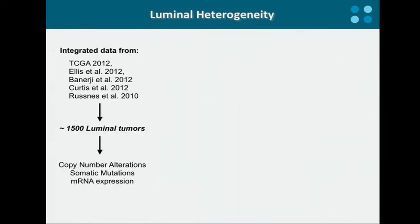So what we did was integrate multiple datasets from different studies, accounting for roughly 1,500 luminal tumors, 1,000 of which are luminal A. From this dataset, we have different data types, but for almost all of them we have copy number alteration, somatic mutation, and mRNA expression.